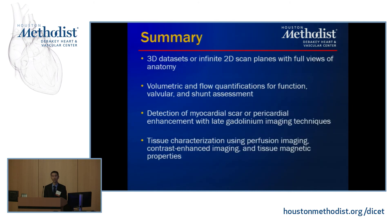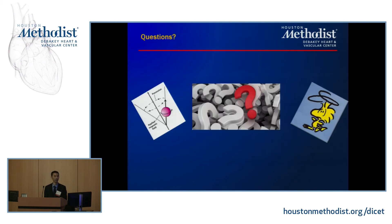In summary, cardiac MRI can provide very nice 3D data sets and infinite 2D scan planes with complete full views of anatomy. We can do volumetric and flow quantification for function, valvular, and shunt assessments. We can detect myocardial scar or pericardial enhancement using late contrast techniques, and contribute in terms of tissue characterization of the heart and surrounding structures including masses. Thank you for your attention.